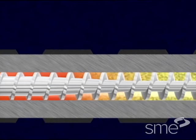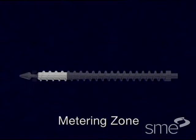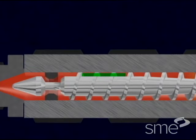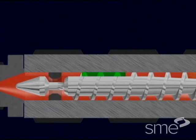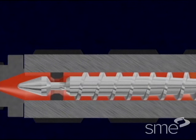The melt zone leads to the third, or metering zone. The metering zone has a constant flight depth much smaller than that of the feed zone. This section acts as a pump.